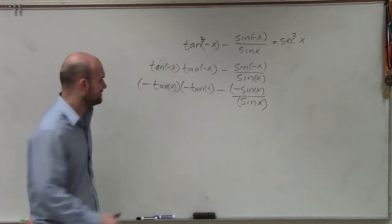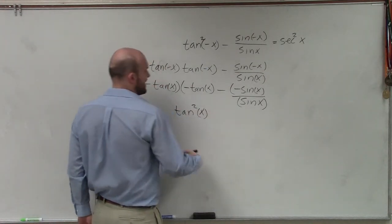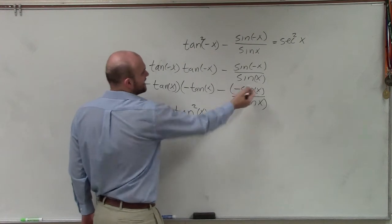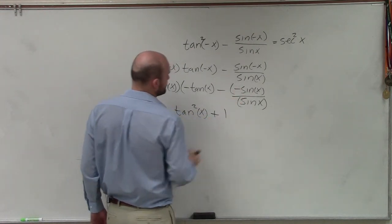Well, you can see a negative tangent of x times a negative tangent of x is now going to be a positive tangent squared of x. And a minus a negative sine over sine, well, that's going to become 1. But the minus is subtracted out, so there'll be plus 1.